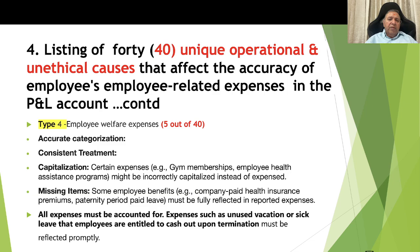Type 4, employee welfare expenses: there are 5 causes. One is inaccurate categorization. Two is consistent treatment. Three is capitalization: certain expenses like gym memberships or employee health assistance programs might be incorrectly capitalized instead of expensed. Four is missing items: some employee benefits like company-paid health insurance premiums and paid paternity leave must be fully reflected in reported expenses. Five is ensuring all accrued expenses such as unused vacation or sick leave that employees are entitled to cash out upon termination must be reflected promptly.